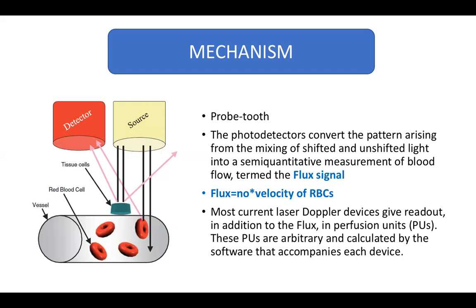The flux is a measure of the number of red blood cells and their velocity. Most current laser Doppler flowmeters also give a readout in perfusion units, which are arbitrary and calculated by the software of a particular device. Hence, different devices give different perfusion units and they cannot be compared.